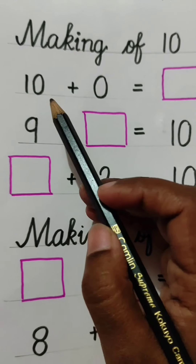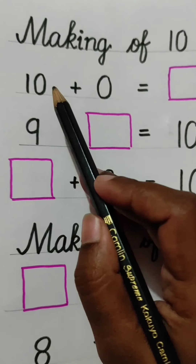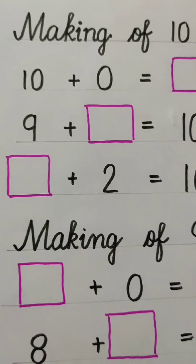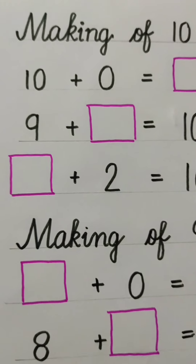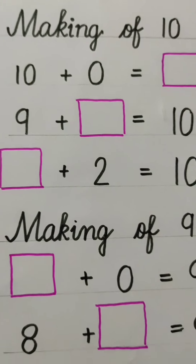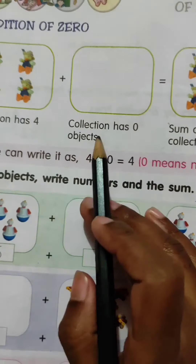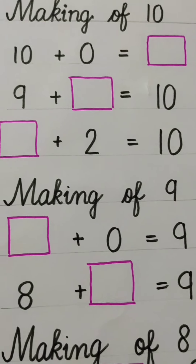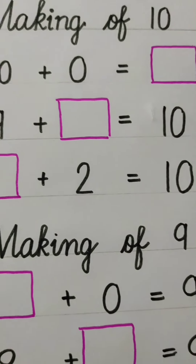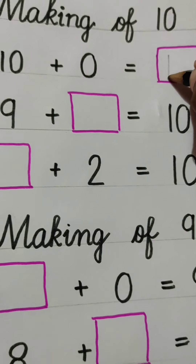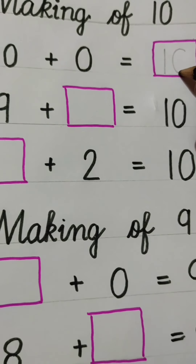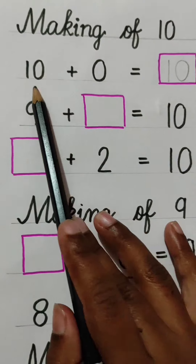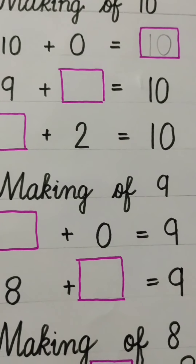First question: 10 plus 0. 10 plus 0 कितना होता है? मैंने आपको पहले ही बताया था कि अगर किसी भी number में हम लोग 0 को add करते हैं, तो हमारा answer same number आता है. So we will write here 10. 10 plus 0 is equal to 10.